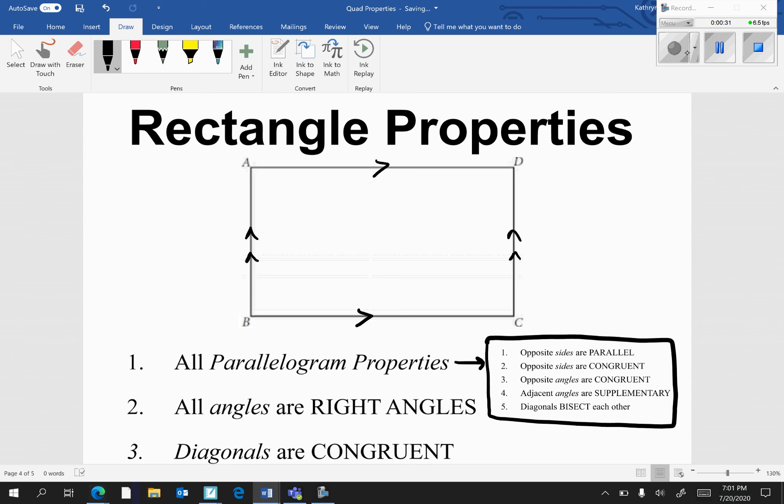Opposite sides are congruent. AD is congruent to BC, and AB is congruent to DC. Opposite angles are congruent. Angle B is congruent to angle D, and angle A is congruent to angle C.